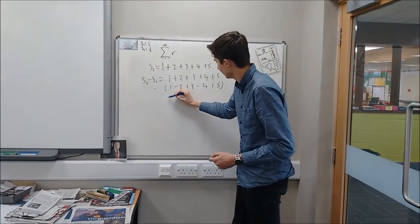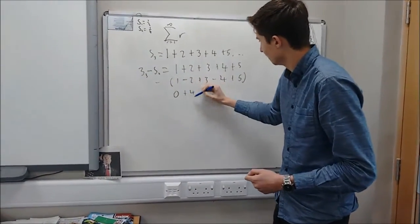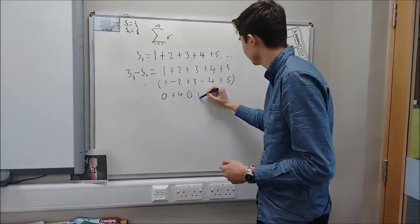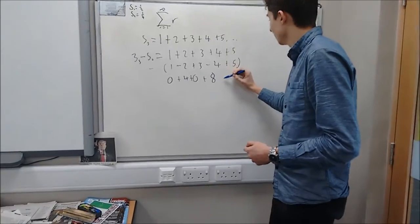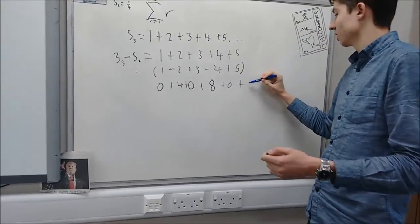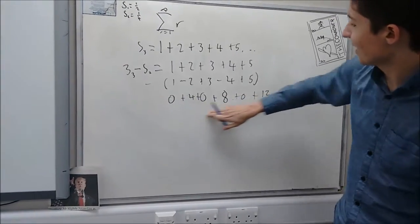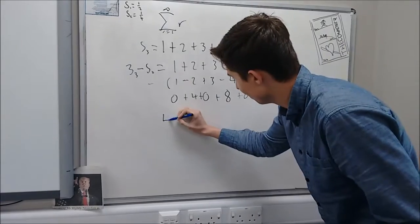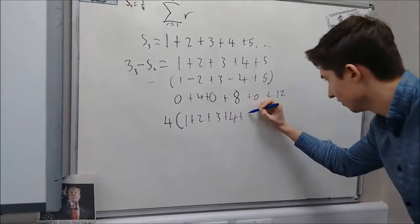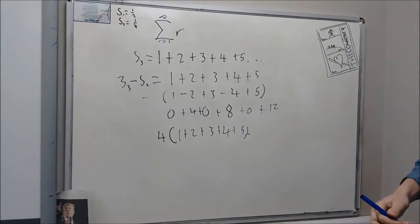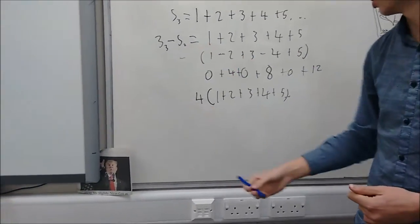And so once we take this away, we can see that these ones cancel out and you get 0 here. Minus and minus 2, 2 minus minus 2, that's 4. 3 minus 3, 0. 4 minus minus 4 is 8, plus 0, plus 12. It goes up in multiples of 4. And so we can take a factor of 4 out of this, and we can call that 4 times 1 plus 2 plus 3 plus 4 plus 5, dot dot dot, infinity. And so we're going to get 4 times S3, S3 minus S2 equals 4 times S3.